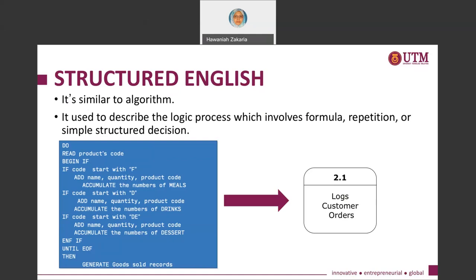As you can see here, you have a process — log customer order — and on the left side is the structured English representing the logic of that process. You can easily understand it. We start with a DO, then read product code. BEGIN IF: if code starts with S, you do something; if code starts with D, you do the next thing; if code starts with DE, you do the next thing. People can easily relate to and understand this process logic to log a customer order.